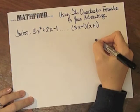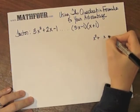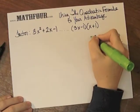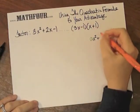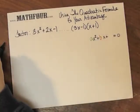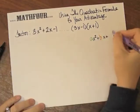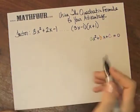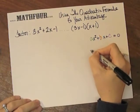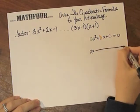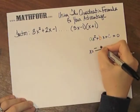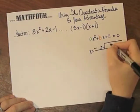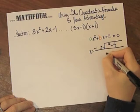So I'm going to use the quadratic formula. If you have ax squared plus bx plus c — this is in the video right above this one. If you are watching this on YouTube, you can go to mathfour.com to see the rest of this video. The formula is: opposite of b plus or minus the square root of b squared minus 4ac, over 2a.